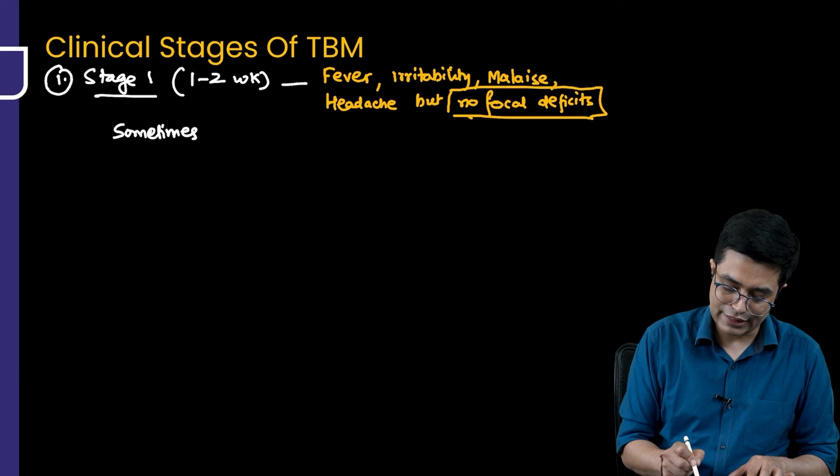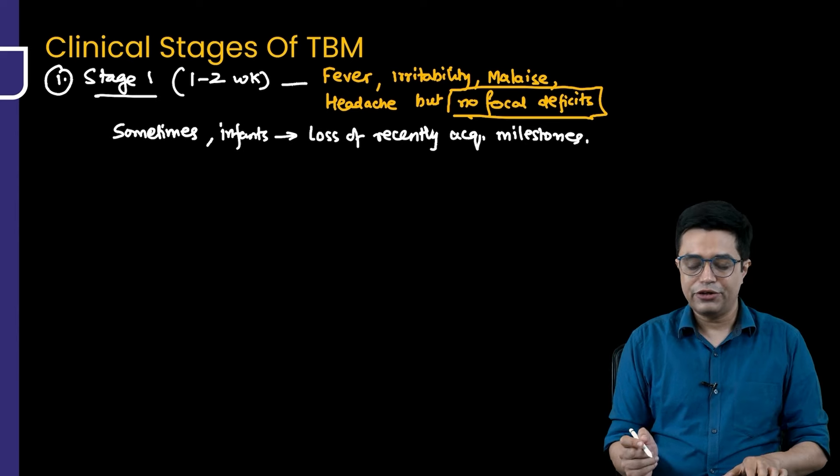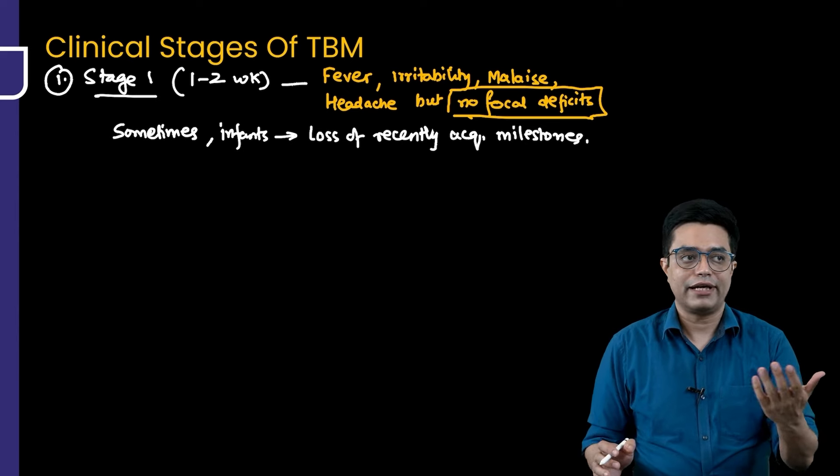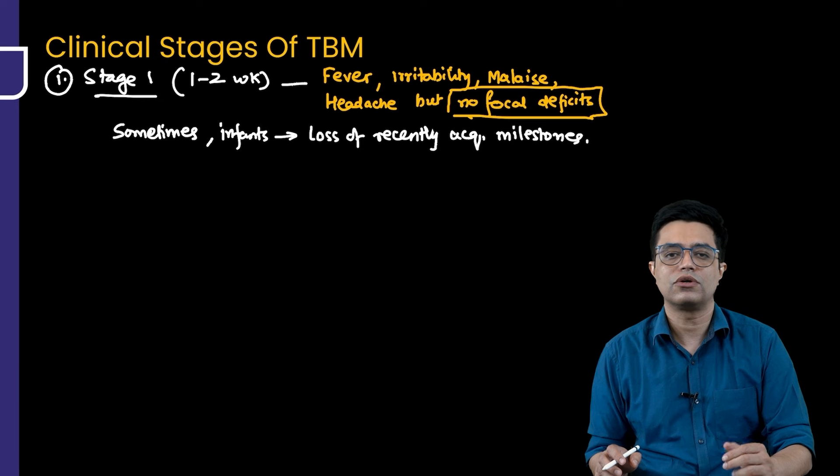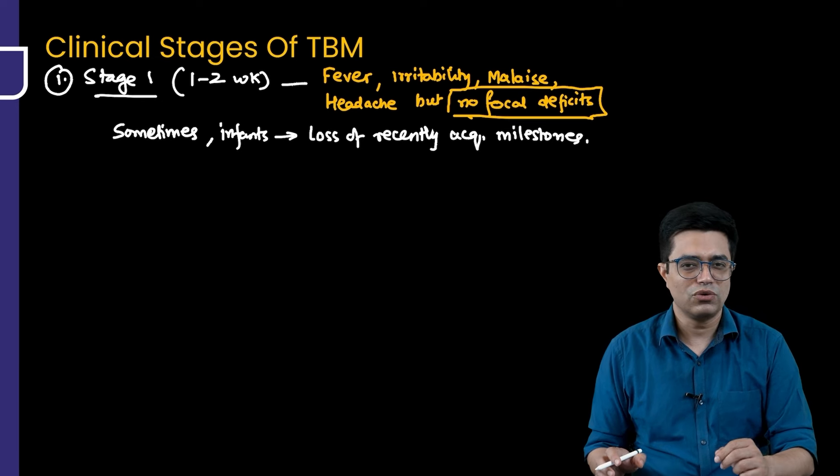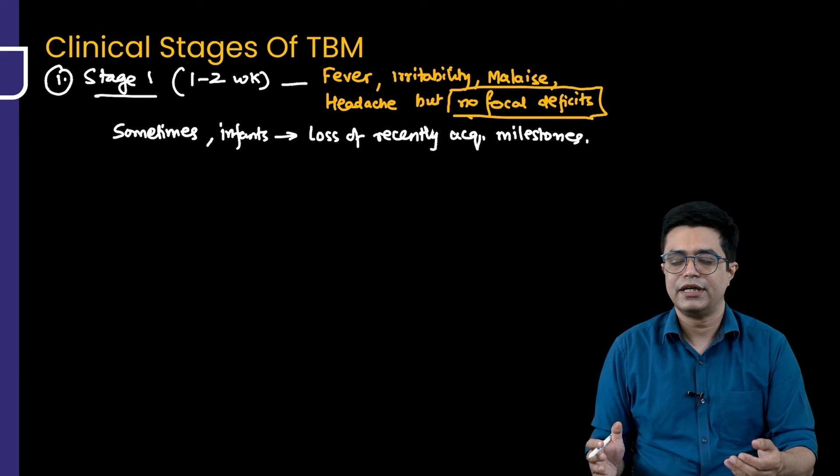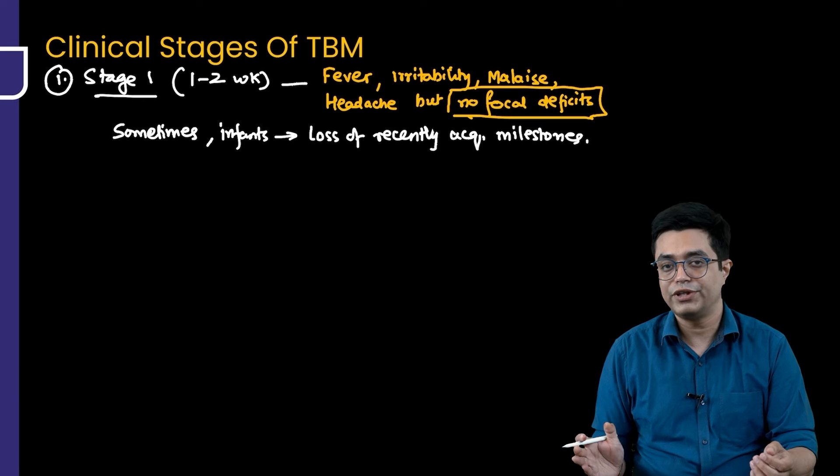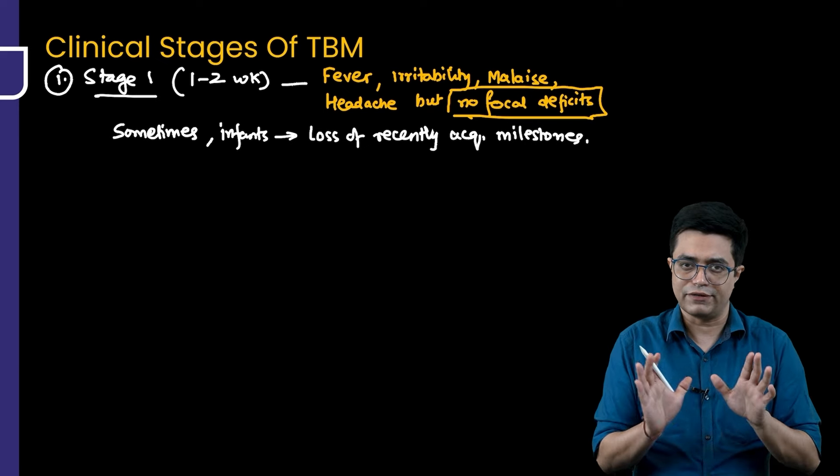Sometimes, if tubercular meningitis is happening in infants, you will find that there is a loss of recently acquired milestones in some of these patients. That will occur in stage 1. Stage 1, the degree of fever is usually moderate grade. Textbooks sometimes say that there is an evening rise in temperature, but in clinical practice, that evening rise of temperature is not always present. Moderate to low-grade fever, non-specific features, irritability, headache will be there for 1 to 2 weeks. Some of the Indian textbooks say it can last for up to 4 weeks, but most of the Western textbooks and standard books, standard articles say it is about 1 to 2 weeks. We will stick with Nelson here.